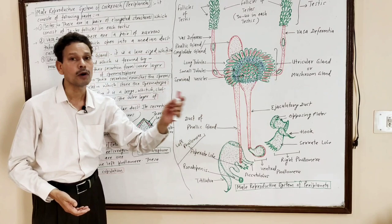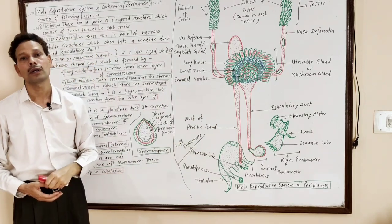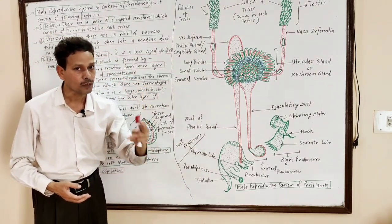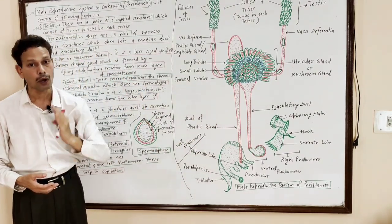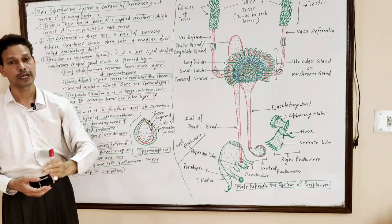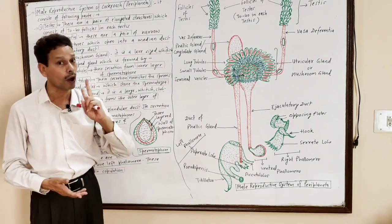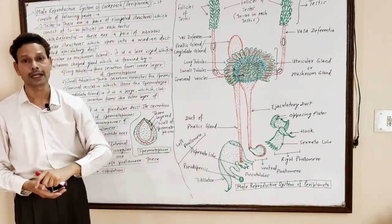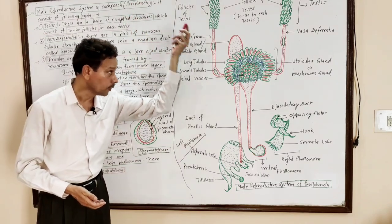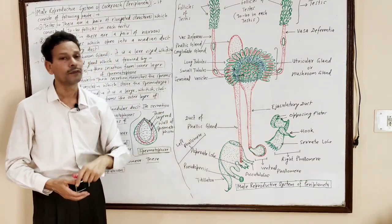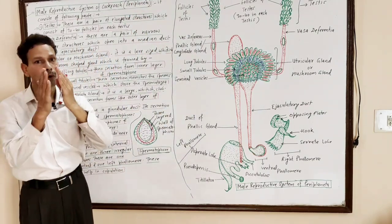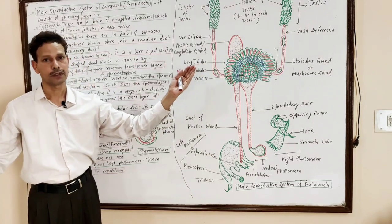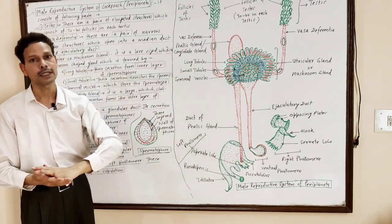Today we will cover the male reproductive system of cockroach — a final exam topic for all BSc first year students. In the case of cockroach, both sexes are separate; the animal is dioecious.